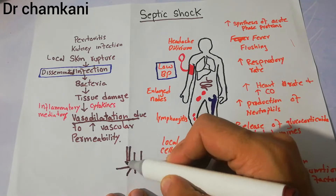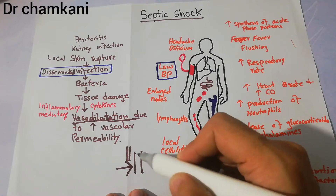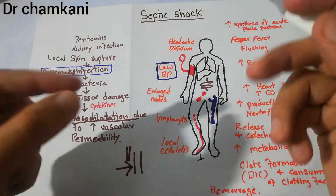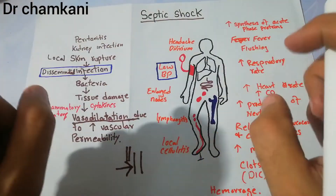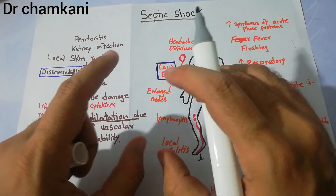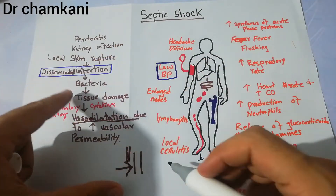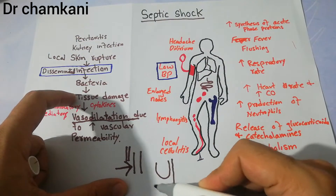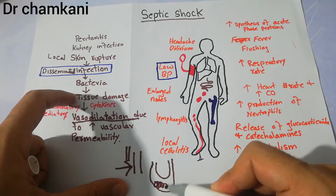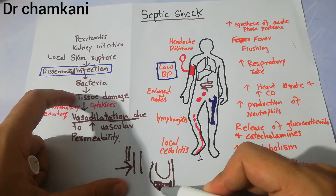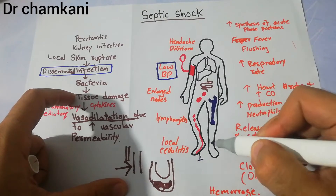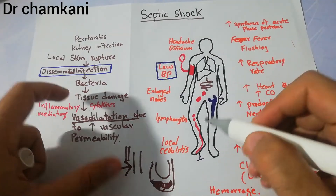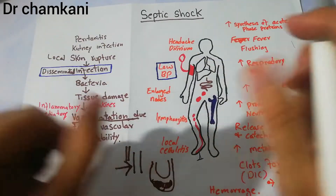For example, if this was the blood vessel initially, it becomes this much dilated. Due to dilation of the blood vessels — especially the veins — blood starts pooling in them. When blood pools in dilated vessels, it is very difficult for blood to come back to the heart; it starts pooling in the tissues and blood vessels.